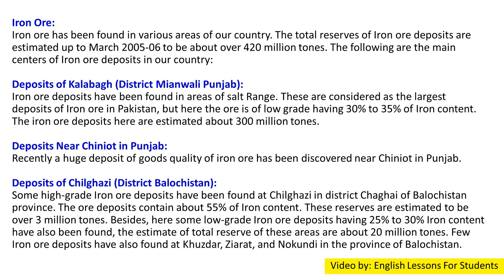These reserves are estimated to be over 3 million tons. Besides this, some low-grade iron ore deposits having 25% to 30% iron content have also been found, with a total estimated reserve of about 20 million tons. A few iron ore deposits have also been found at Khuzdar, Ziarat, and Nokundi in the province of Balochistan.